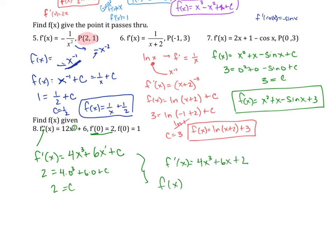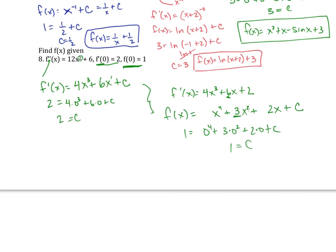Now take the antiderivative of f prime of x to find f of x. The antiderivative of 4x cubed is x to the fourth; of 6x is 3x squared; of 2 is 2x. So f of x equals x to the fourth plus 3x squared plus 2x plus C. Given f of 0 equals 1: 1 equals 0 plus 0 plus 0 plus C, so C equals 1. Final result: f of x equals x to the fourth plus 3x squared plus 2x plus 1.